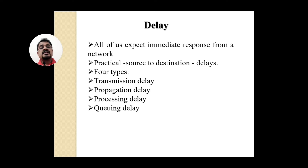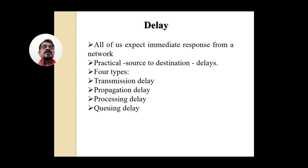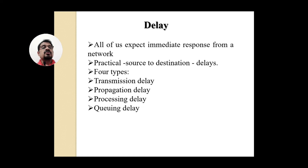The fourth type is queuing delay. If another packet is already being processed, the new packet has to wait in the queue until it gets its turn. The router has its own scheduling algorithm, and some priority mechanism may also be in place to determine which packet gets processed next, causing queuing delay. In total, there are four types of delays: transmission delay, propagation delay, processing delay, and queuing delay.